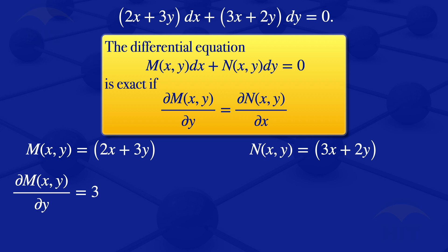Now go on and evaluate the partial derivative of N with respect to x. When you are looking at the partial derivative of N with respect to x, we are differentiating 3x + 2y with respect to x, treating y as if it's a constant. So the partial derivative of N with respect to x is equal to 3.